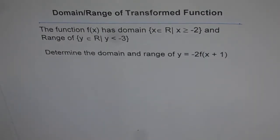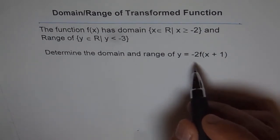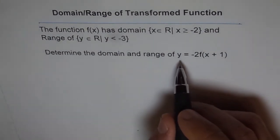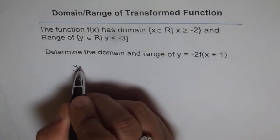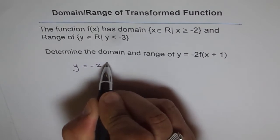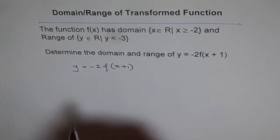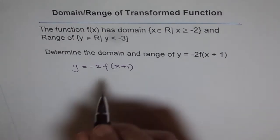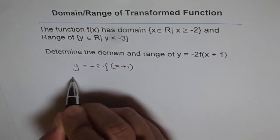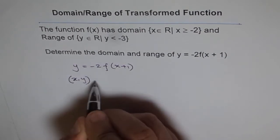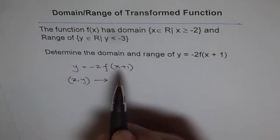To solve these kinds of questions, we need to see how the points get transformed. The function we have is y = -2f(x + 1). If I have original function points as (x, y), how are they going to transform on this function?